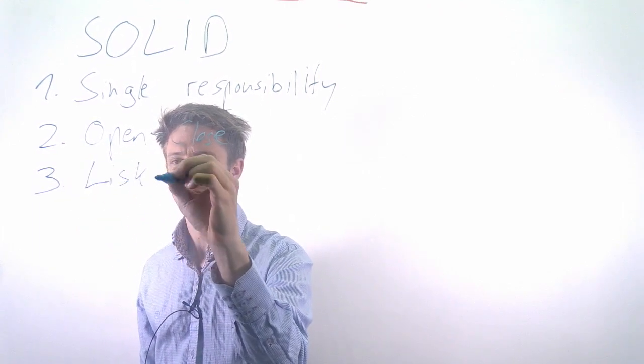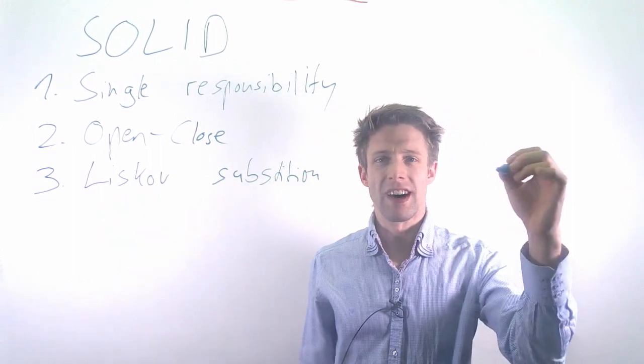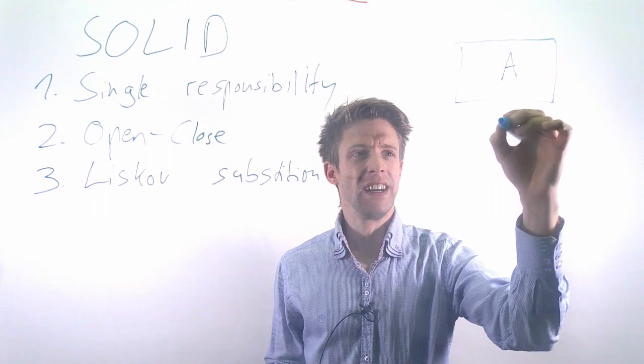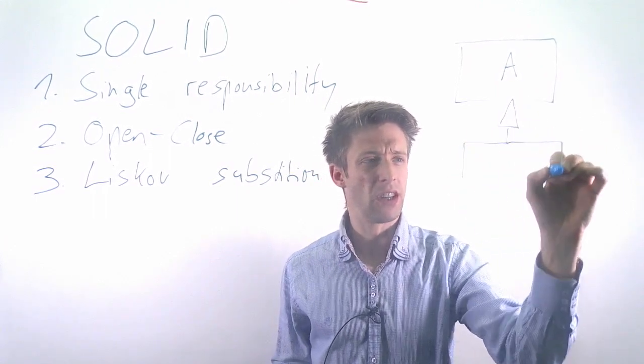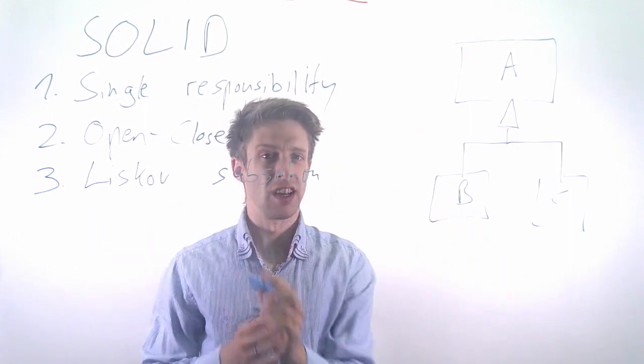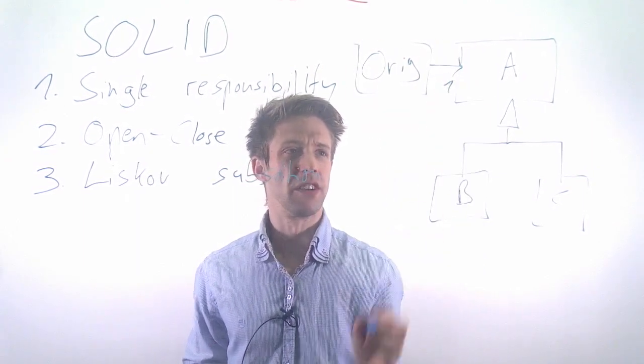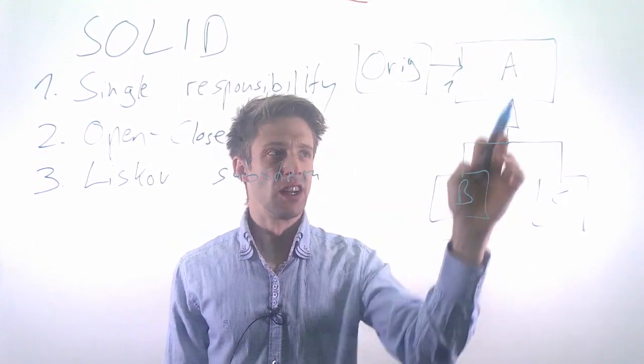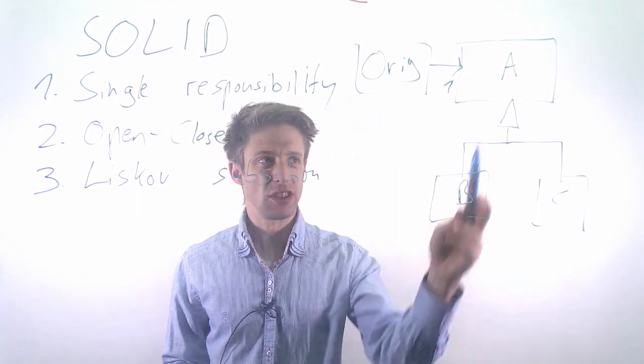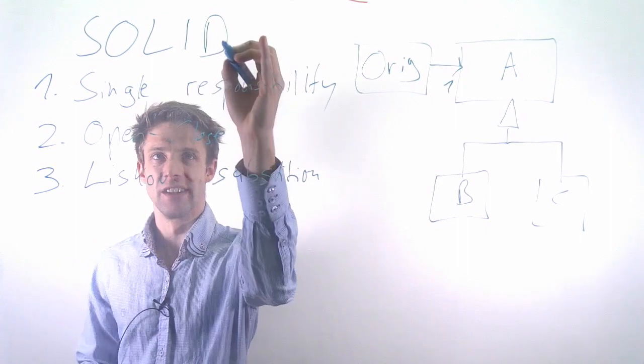The third principle is Liskov substitution. If you have a class that depends on another class, for example class A, then the implementation should work with all subtypes. If you have class B or class C that inherit from class A, this should not affect the functionality of your original class. If your original class needs an A, it should work with any kind of subtype. It should not depend on the internals of the abstract class. Assume it's any kind of A with any subtype; it should still work. This is related to dependency inversion, which we'll get to.